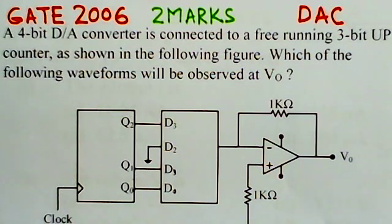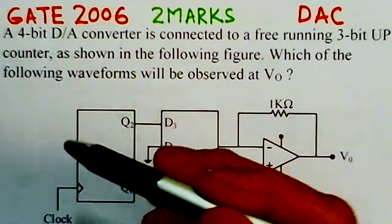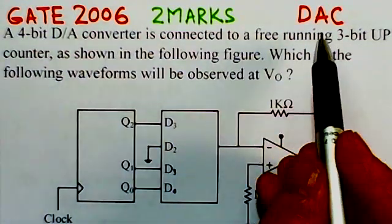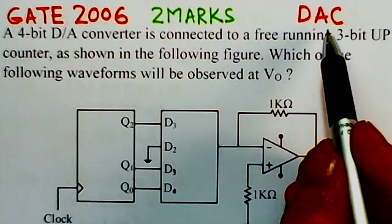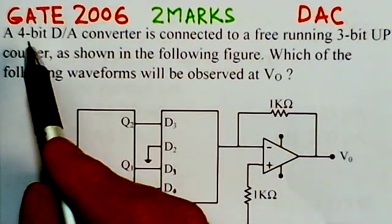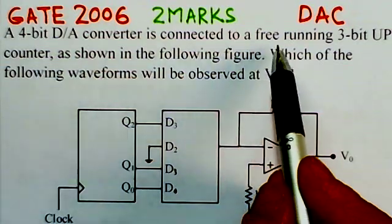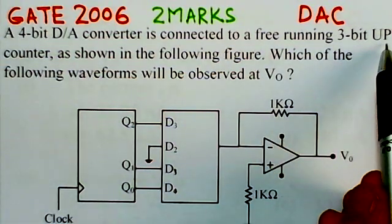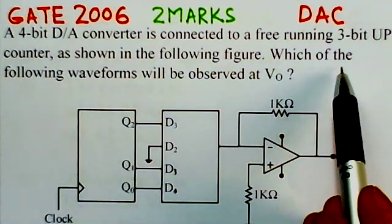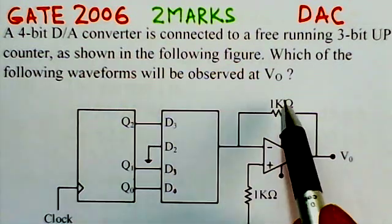The present GATE solution is in the area of ADCs and DACs. The problem is from GATE 2006, worth two marks, and specifically covers D2A converters. A 4-bit D2A converter is connected to a free running 3-bit up counter as shown in the following figure. Which of the following waveforms will be observed at V0?